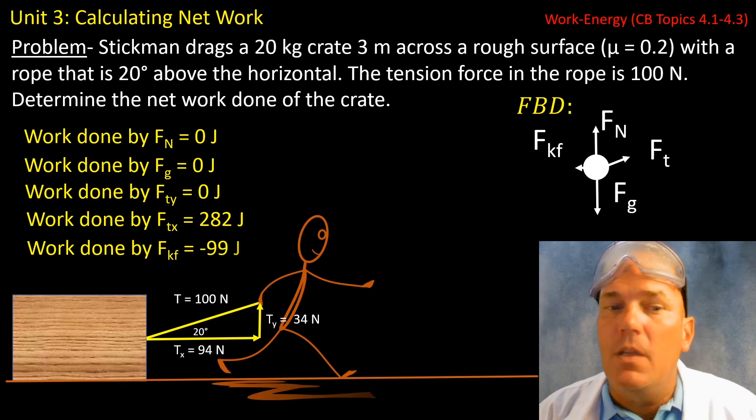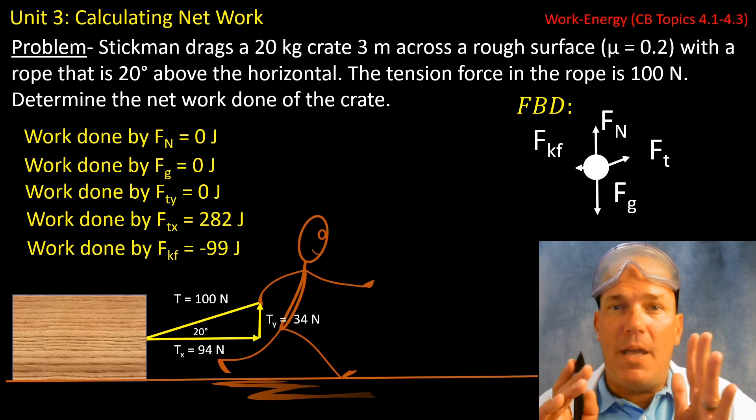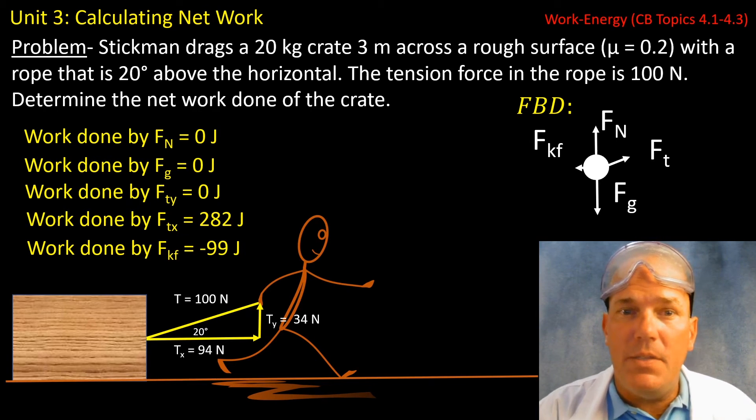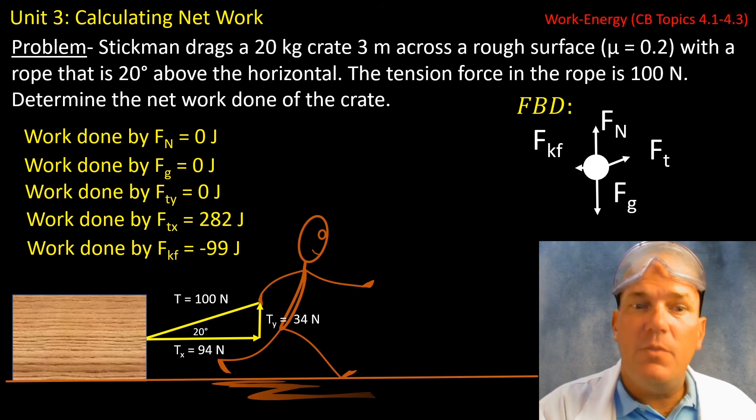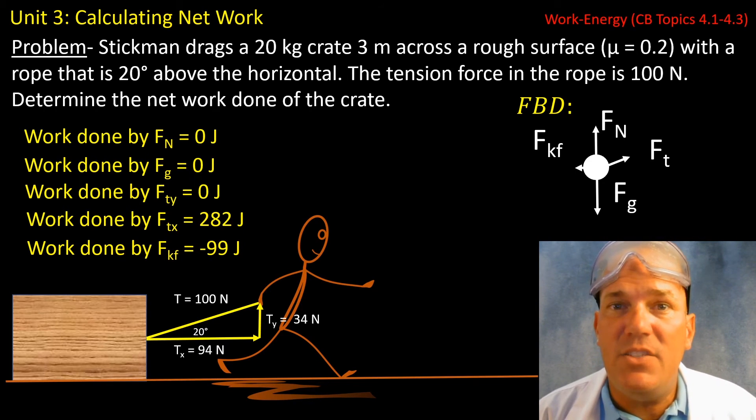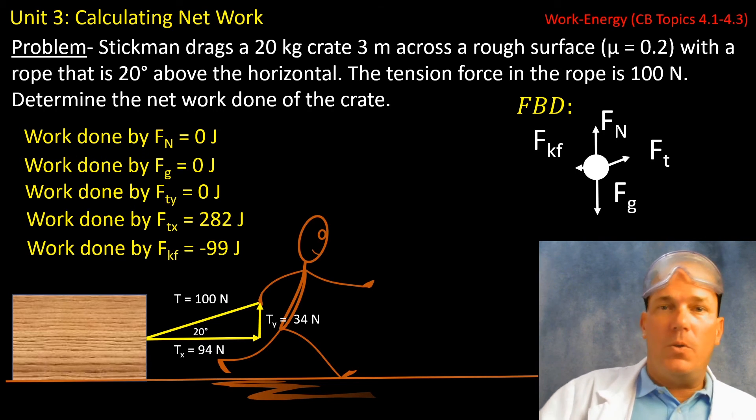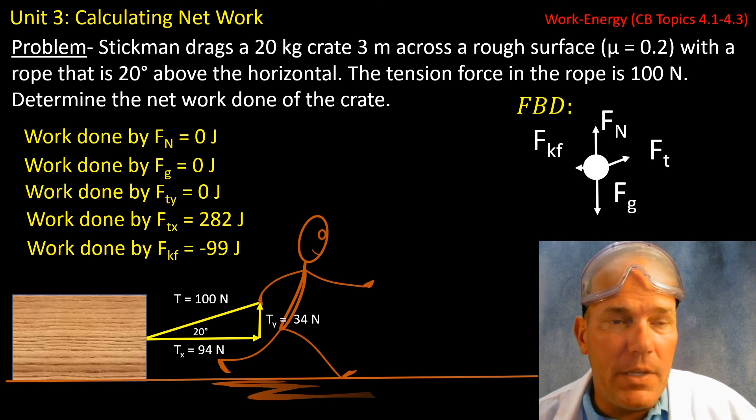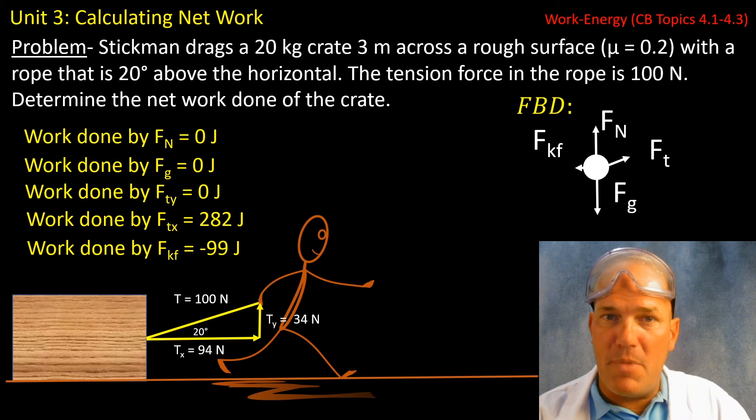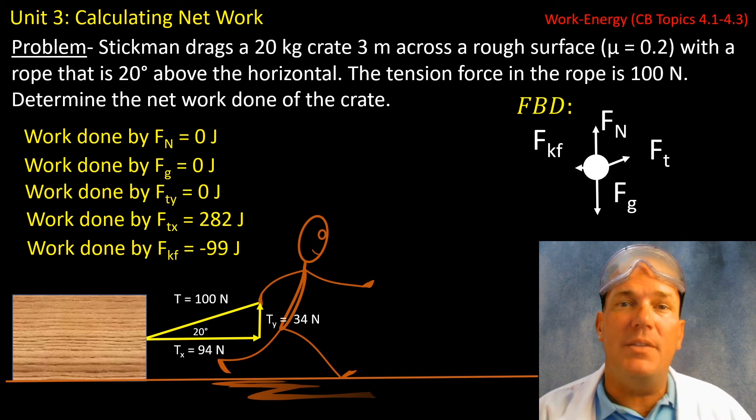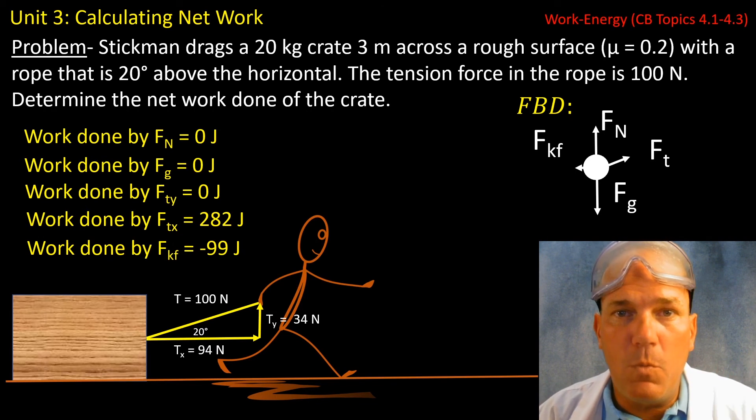The leftward force done by the road onto the crate, the force of kinetic friction, was negative 99 joules because it was in the opposite direction. Cosine of 180 degrees is negative one. Remember, it's the angle that determines the signage for work.